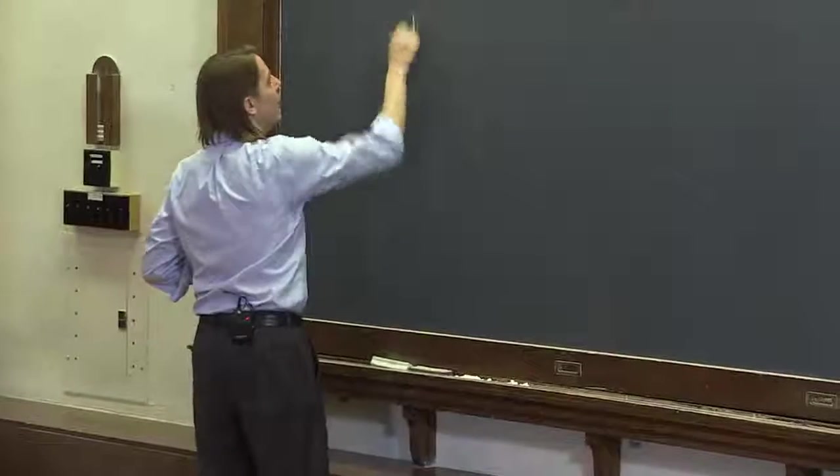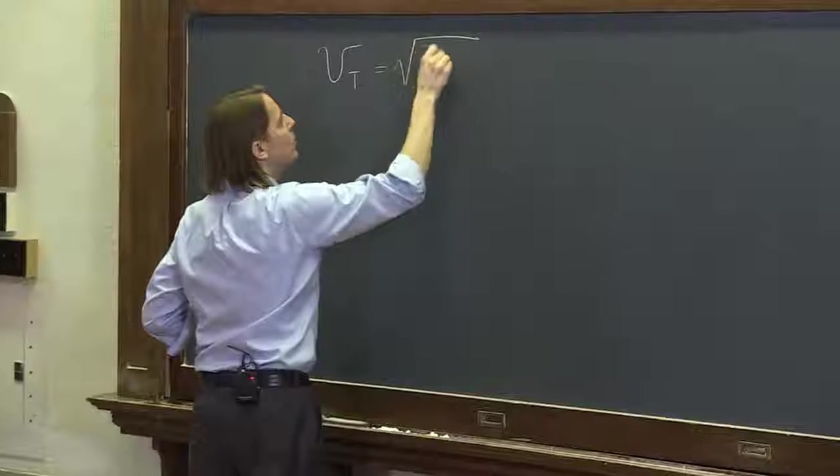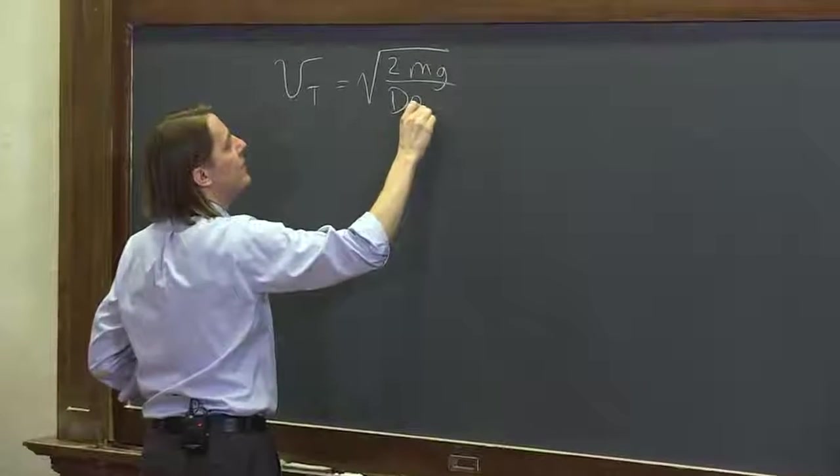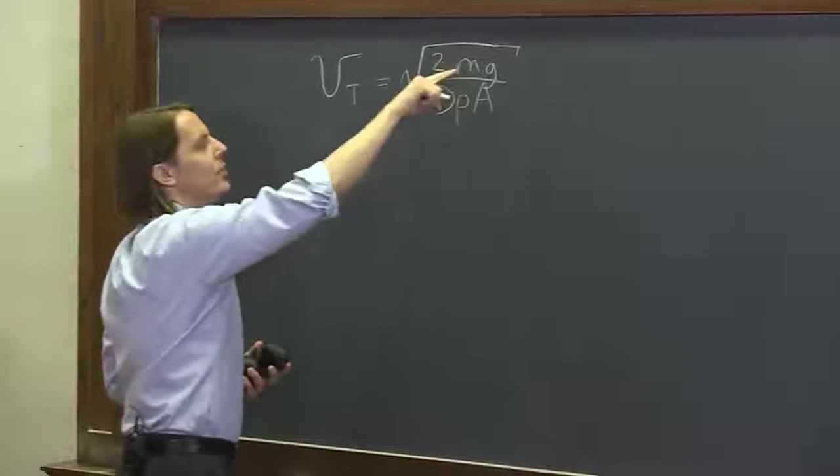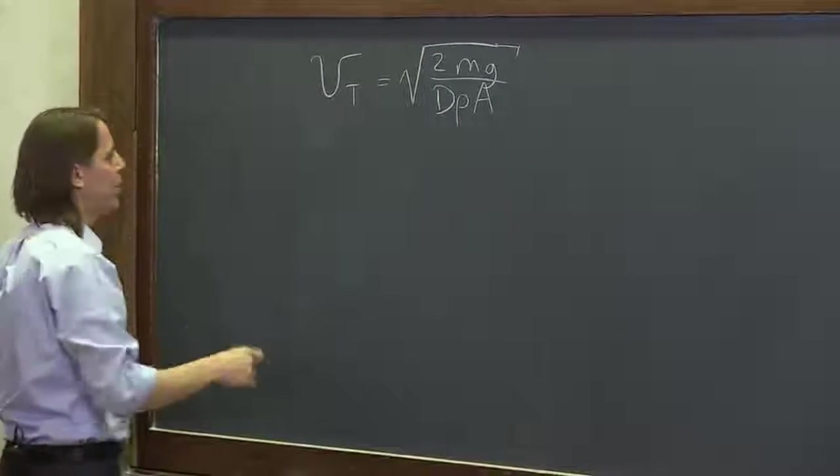They both feel the same drag force, but it has a bigger effect on the lighter ball. We can also see that in our derived formula for the terminal velocity: it was the square root of two times mass times gravity over the drag coefficient times the density of the air times the cross-sectional area. So you would expect the lower mass ball would have the slower terminal velocity, it slows down more from the free fall condition.